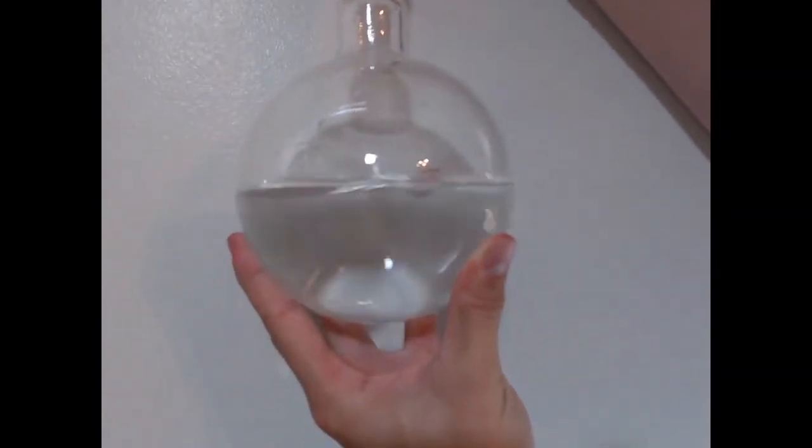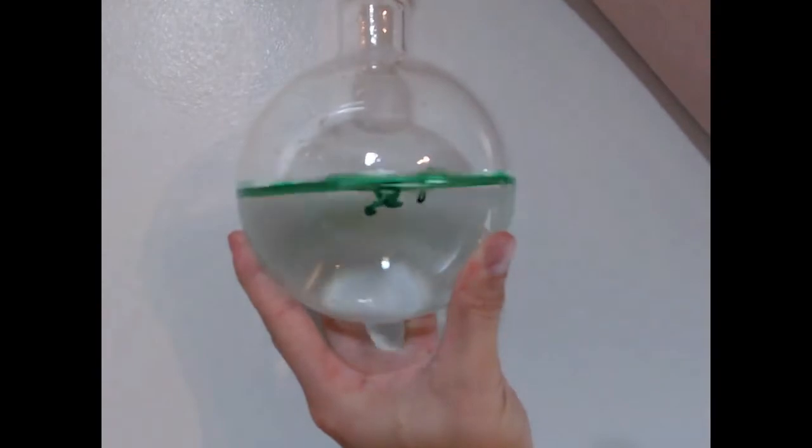To demonstrate how this works, I've filled the round bottom flask with approximately 500 milliliters of water. To the water, I add a few drops of green food coloring.